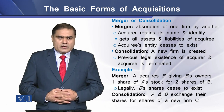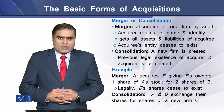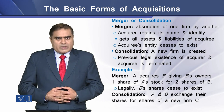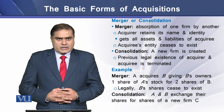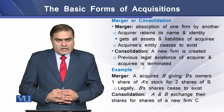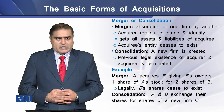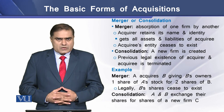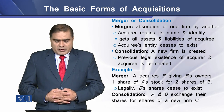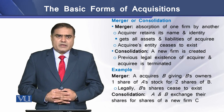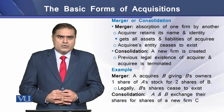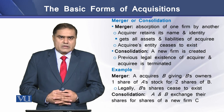So this is how the merger of A and B takes place. In this particular example of merger, legally B's shares cease to exist. In consolidation, A and B exchange their shares for the shares of a new firm C.